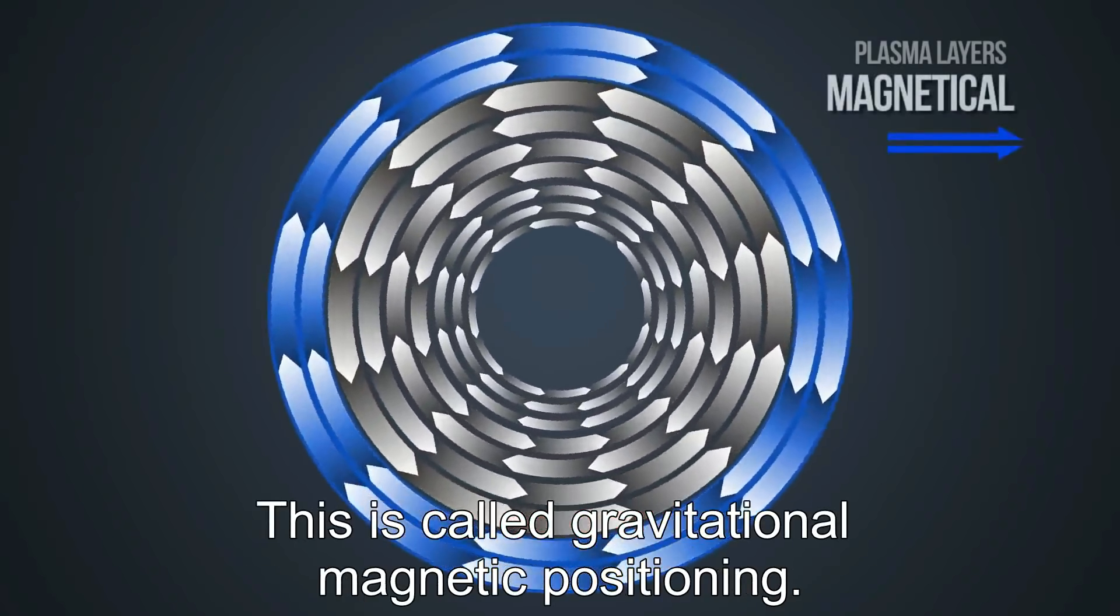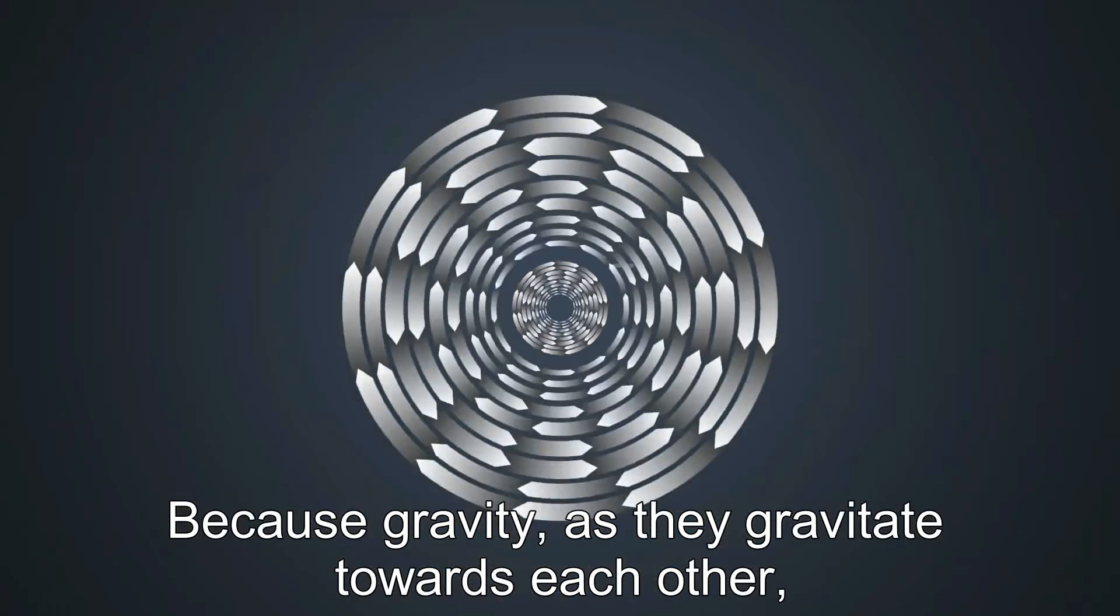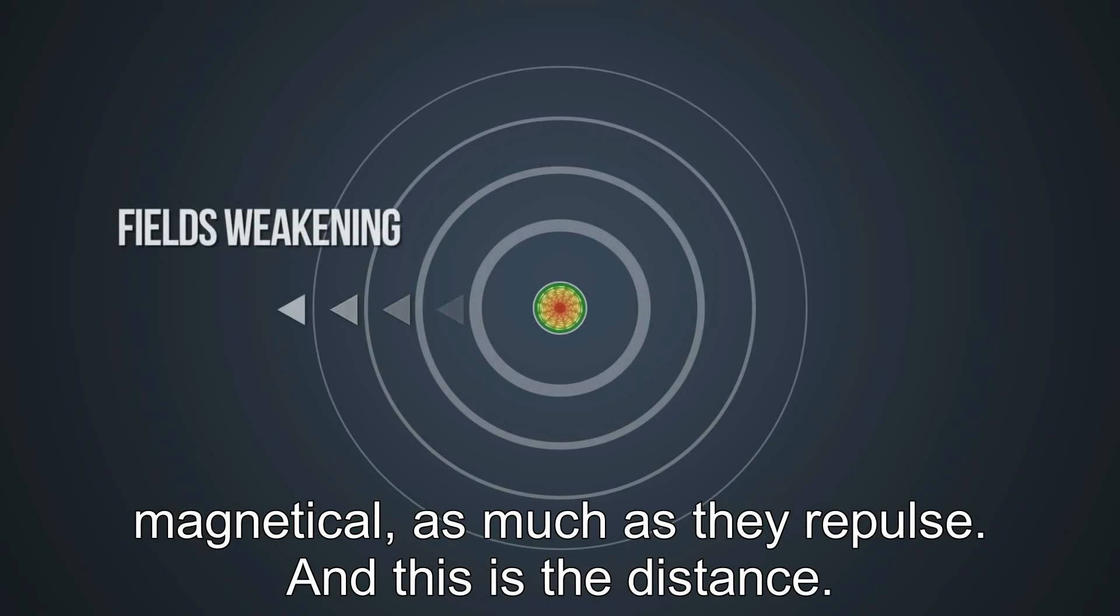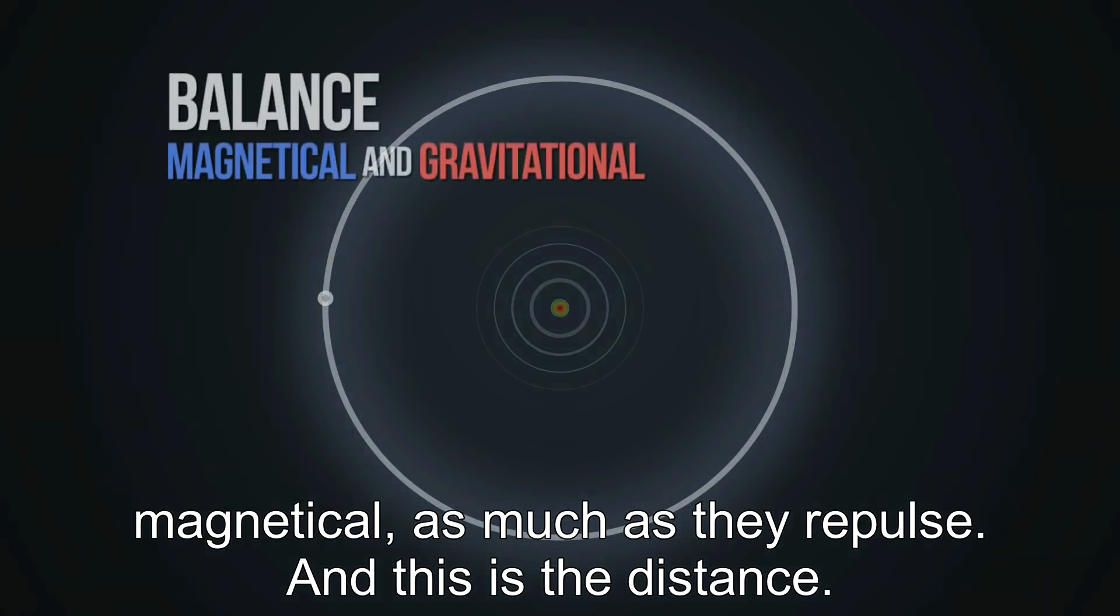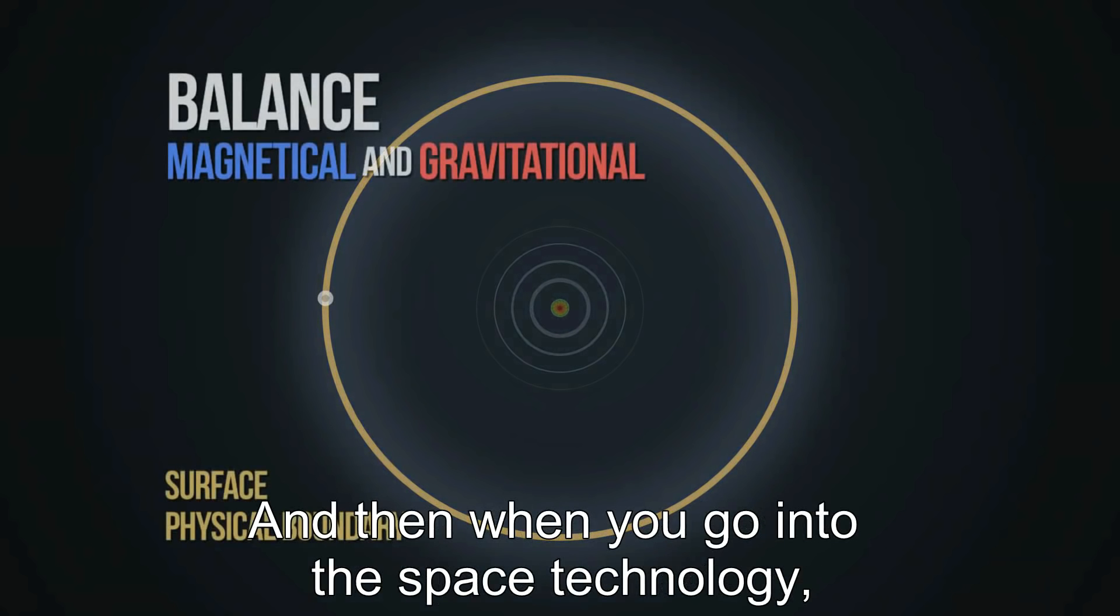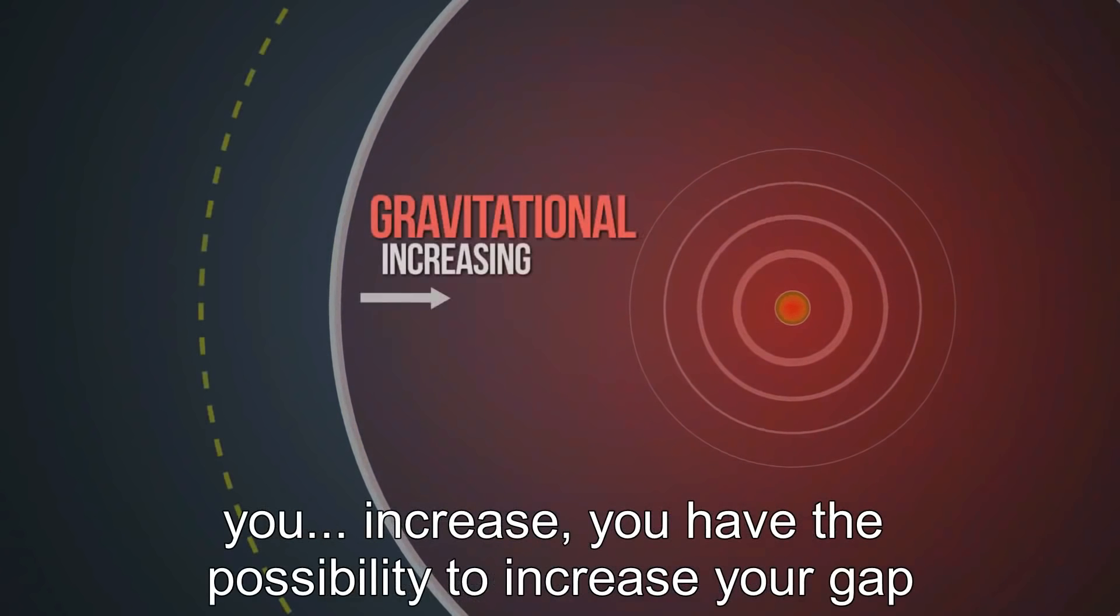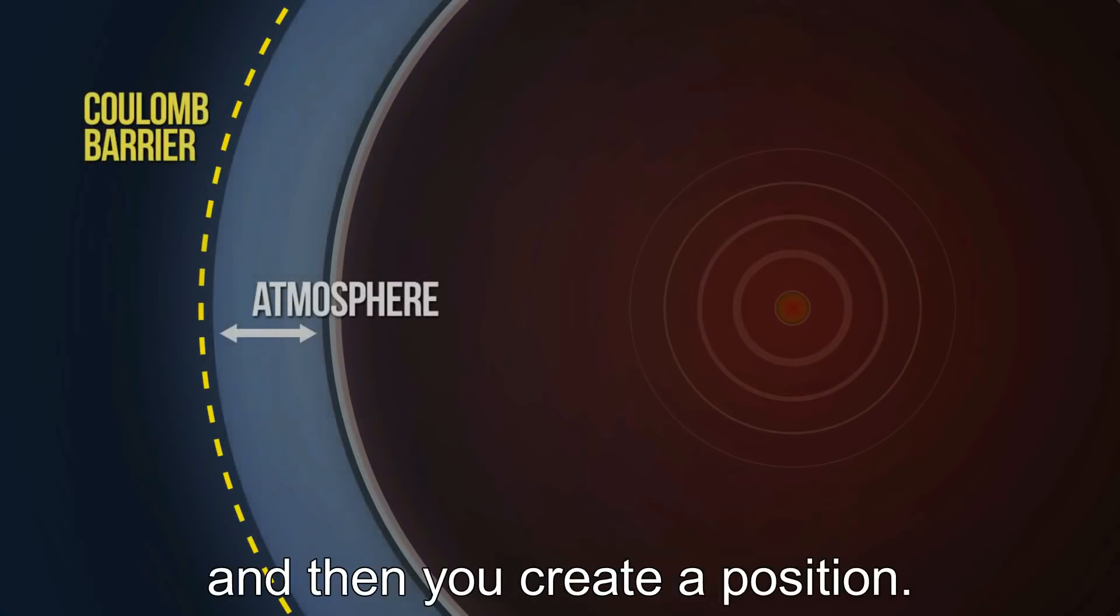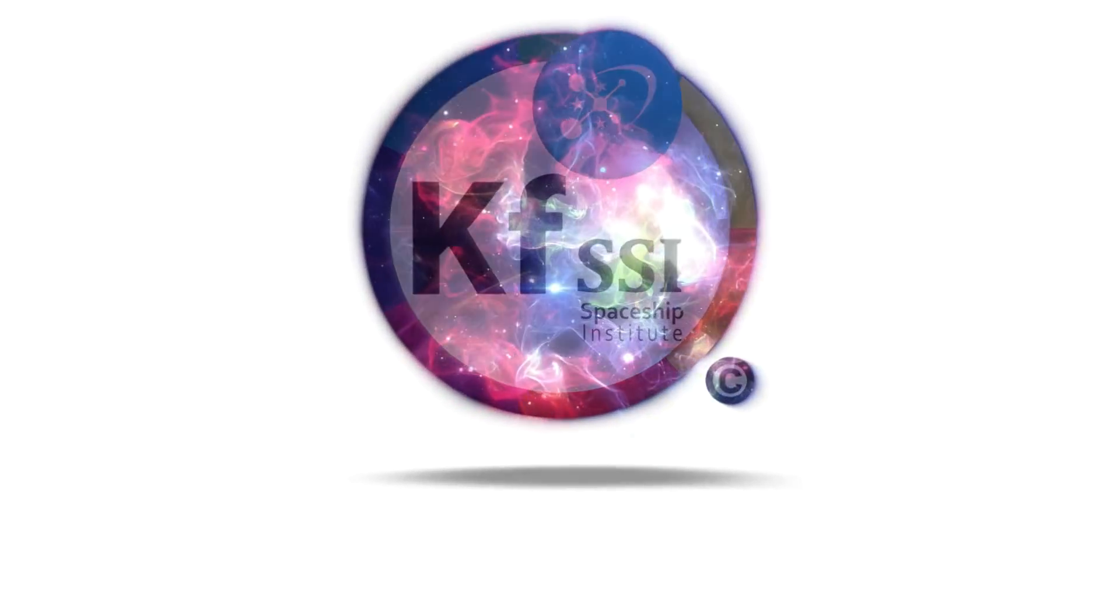This is called gravitational magnetic positioning. Because gravity, as they gravitate towards each other, is magnetically as much as they repulse. And this is the distance. And then when you go into the space technology, you increase - you have the possibility to increase your gap or decrease it - and then you create a position.